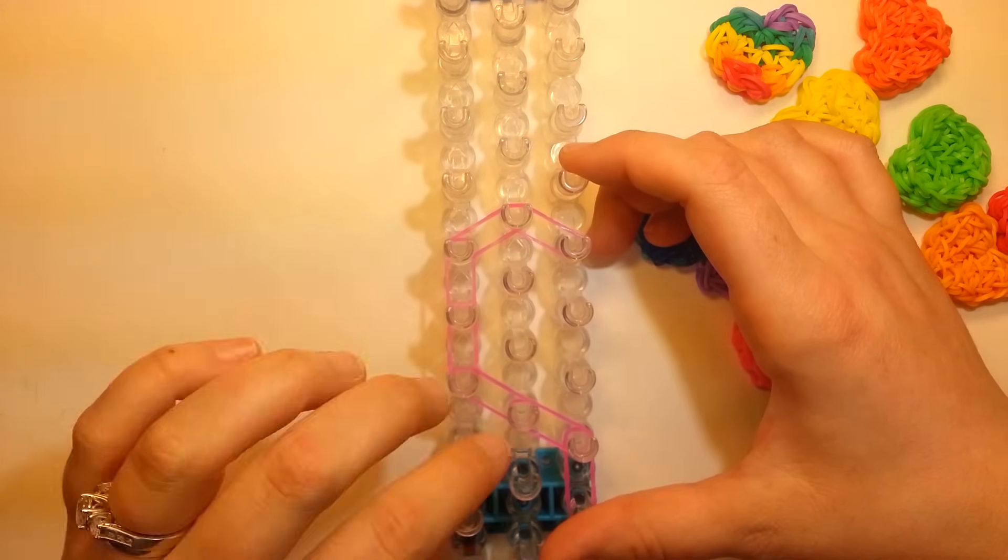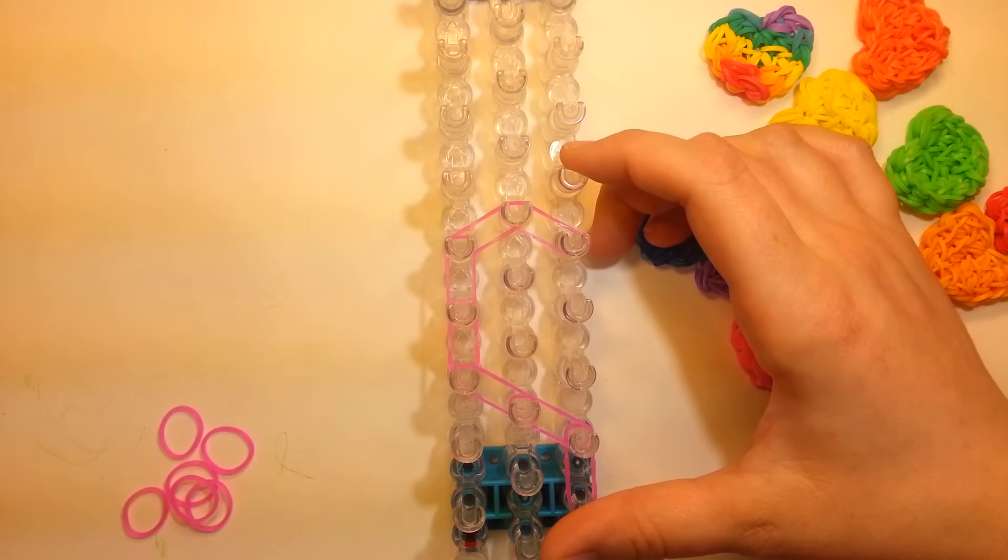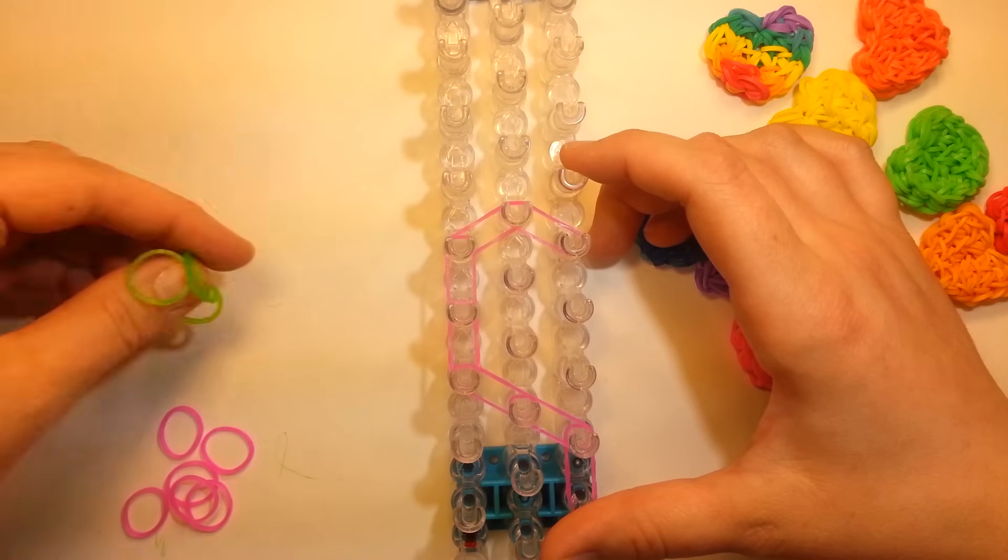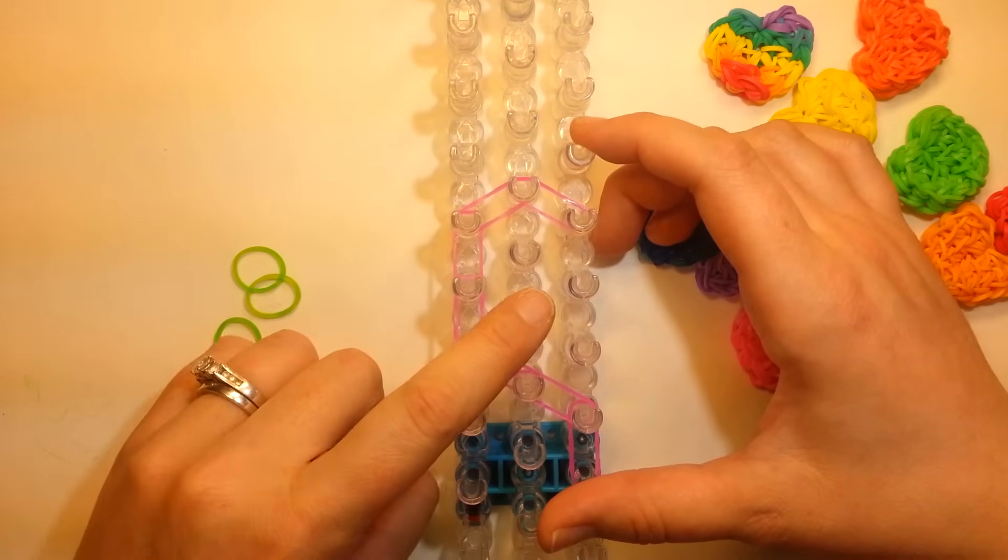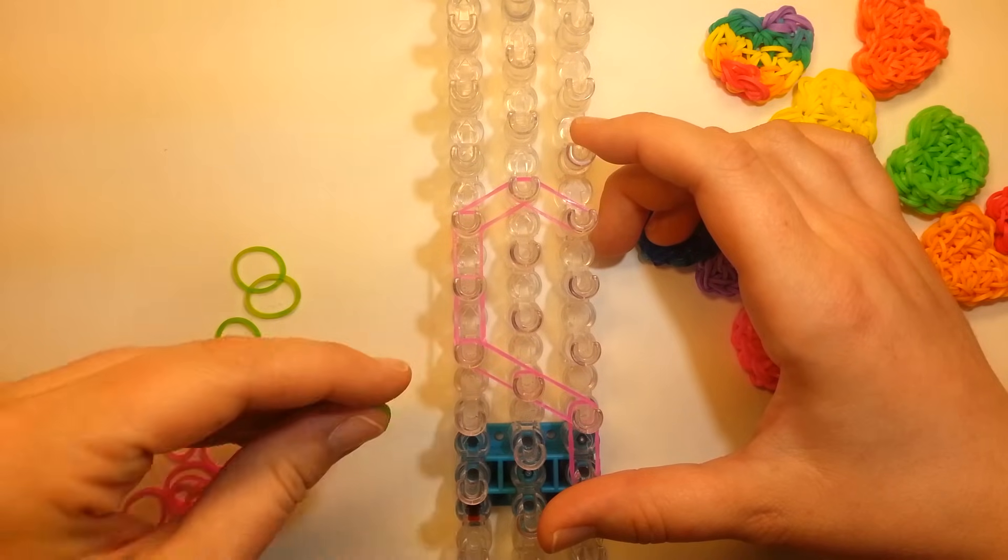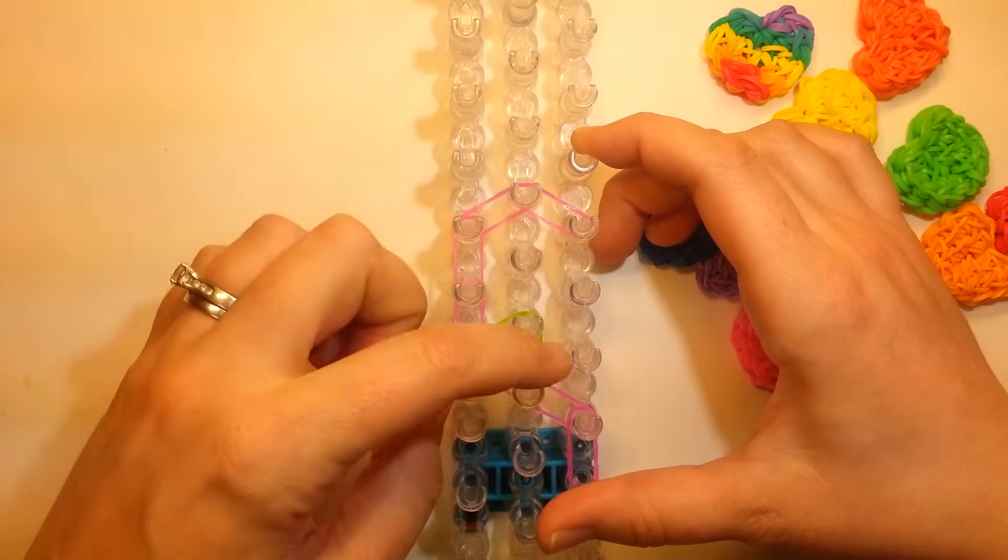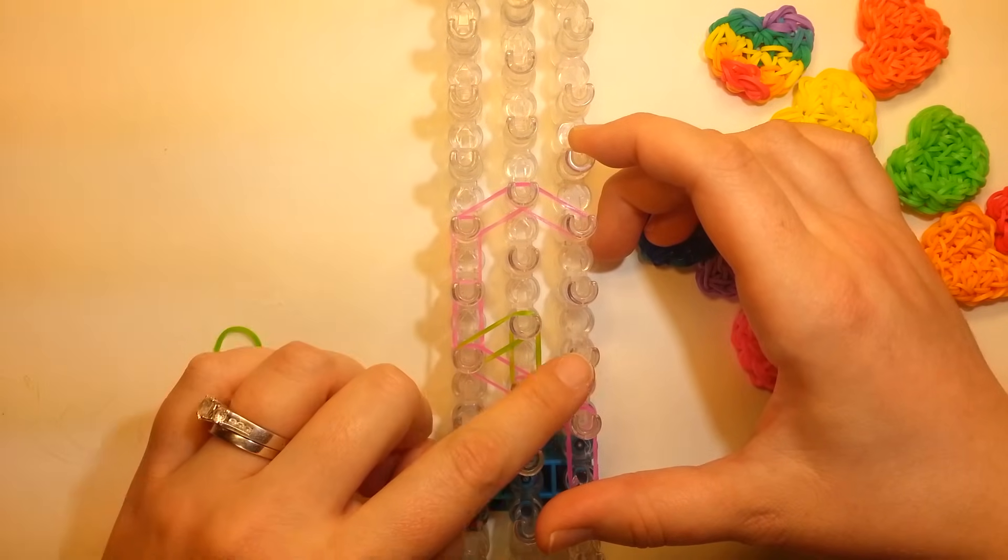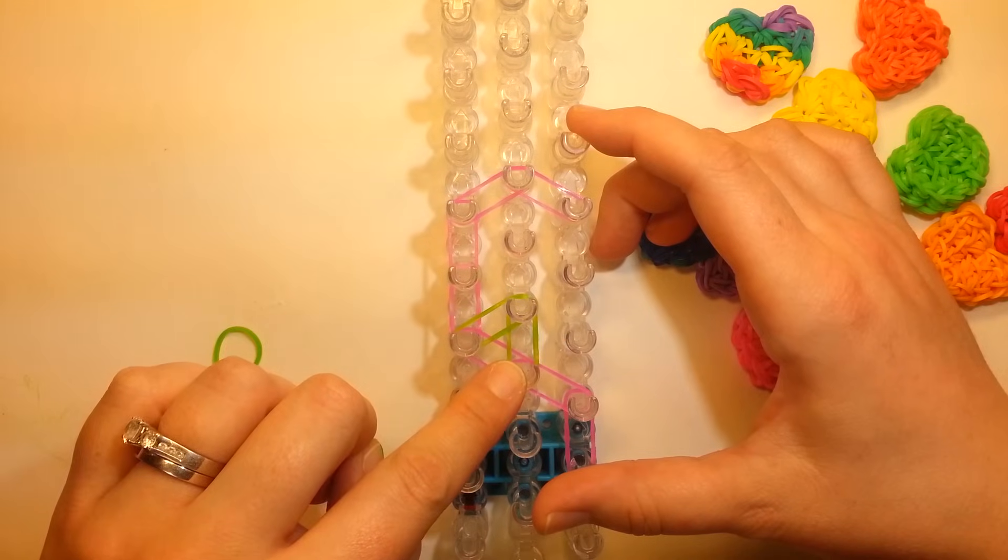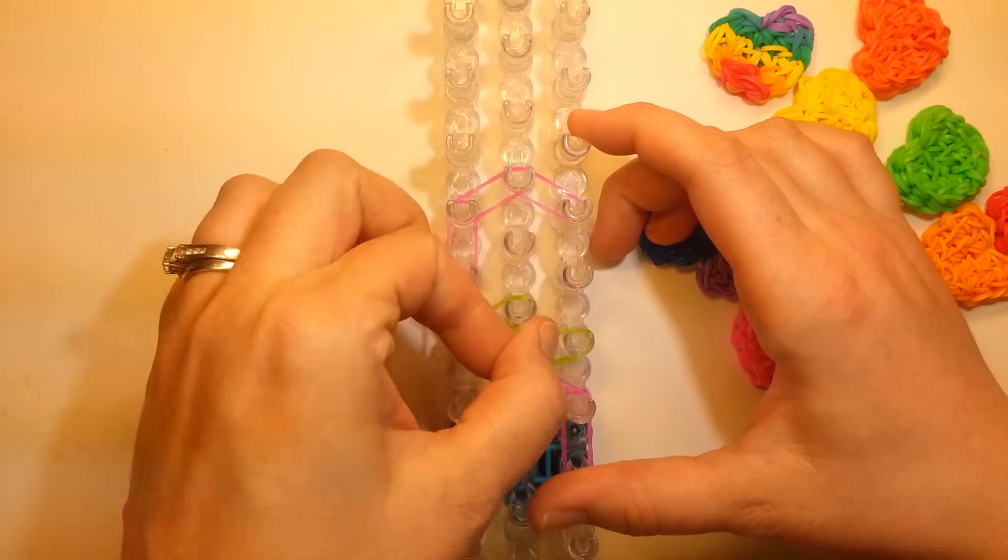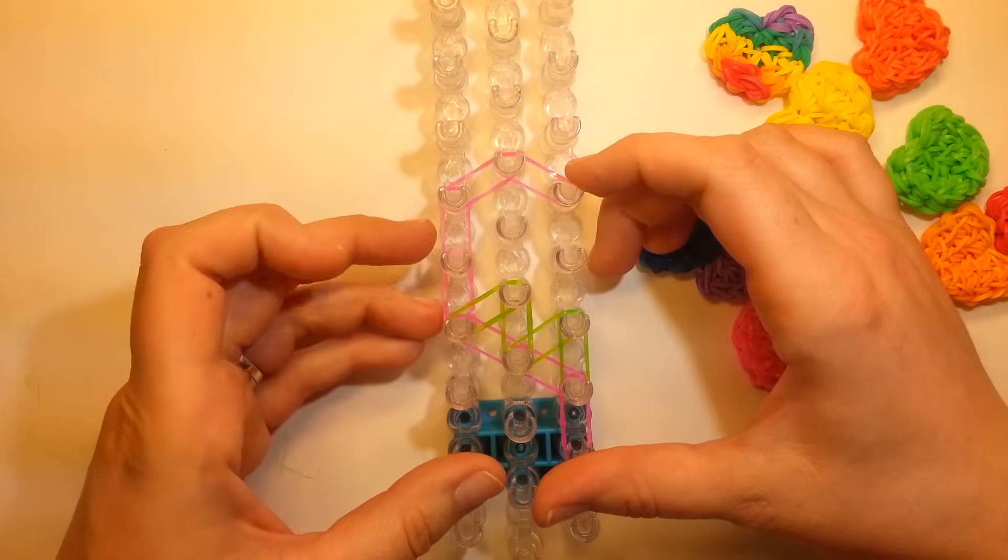Then we're going to do some of the filler bands for this, and do some green. From this pin right here, we're going to come back to the corner, and then come straight down. And then from this pin, we're going to come to the center here, and then straight down. Like so.